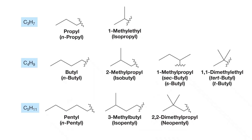Let's begin by defining what we mean by complex substituents. A complex substituent is a substituent that includes branching or has a more intricate structure compared to simple alkyl groups like ethyl, propyl, or butyl. For example, instead of a simple straight-chain propyl group, you might encounter something more complex, such as an ethyl group with a methyl branch, resulting in a 1-methylethyl substituent.